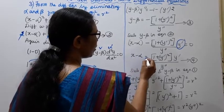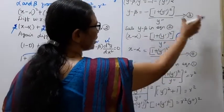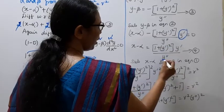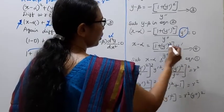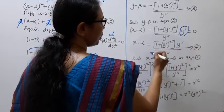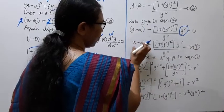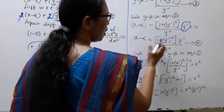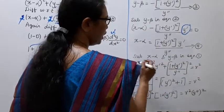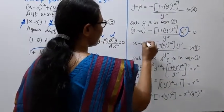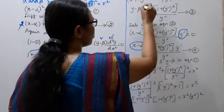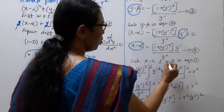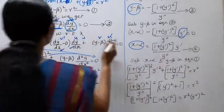So x − alpha = −(1 + y'²) / y'' · y', and y − beta = (1 + y'²) / y''. Now we substitute x − alpha and y − beta back into equation 1.